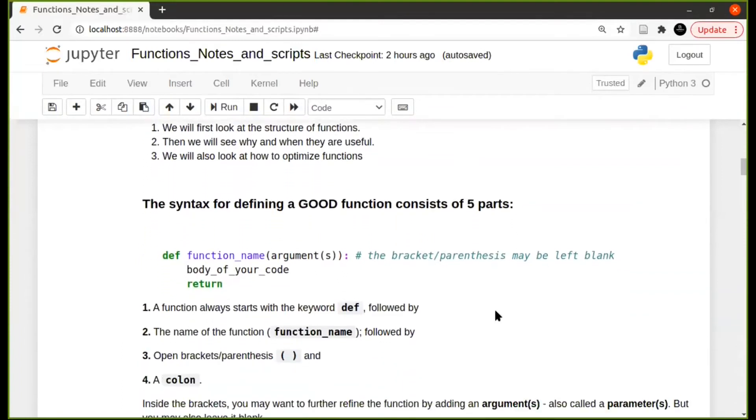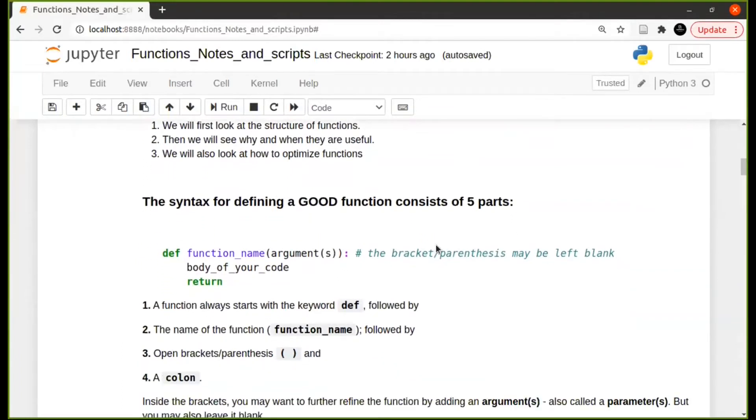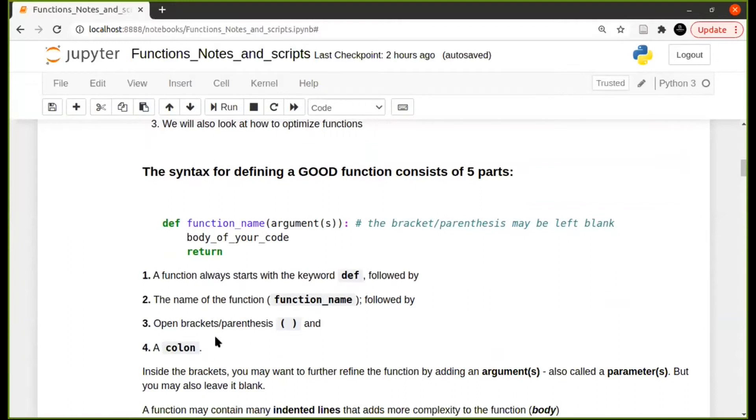Okay, so the typical syntax or structure of a good function is that it consists of mainly five parts. So in Python you recognize a function by this word, def, like for define, define the function. It will then have a function name just like you would have a variable name. And again, choose an intuitive name for your function.